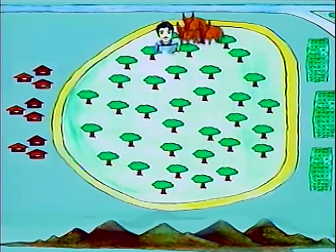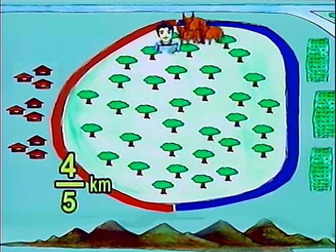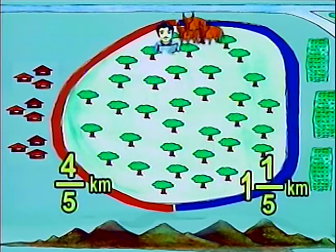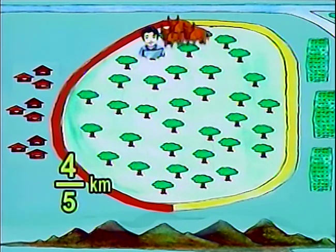Which is the shorter route the boy should take? The first route is 4 fifths kilometer. The second route is 1 and 1 fifths kilometers. Therefore, the shortest way from the riverside to the hill is the first route.